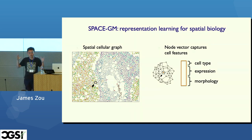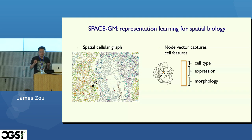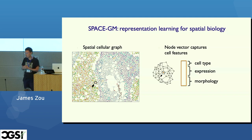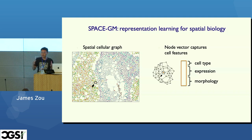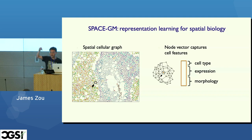The next step is representation learning on this spatial cellular graph. The goal is to learn embeddings to represent individual cells and also individual microenvironments. For each node of the graph — each cell — we have an initial set of cellular features. If we know the cell types, we can use that as a feature. If we know the expressions of different genes or proteins, we can add those as features. Morphological features can also be added. Think of these as vectors attached to each node of the graph.